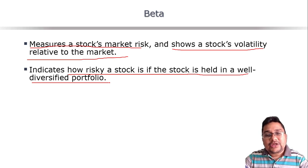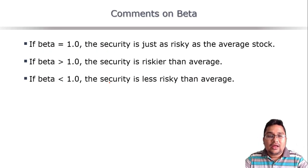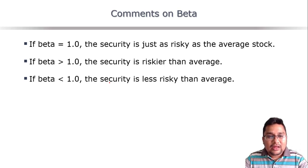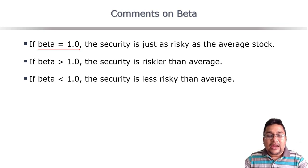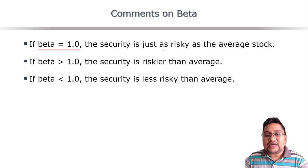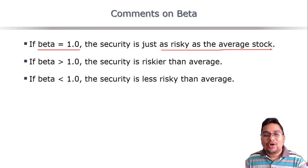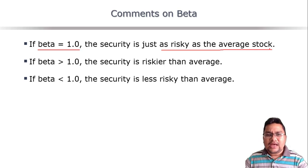Now let us talk about how to interpret beta. If the value of beta is 1, it means the security is just as risky as the average stock or the overall market. It does not have any more or less risk than the market — it is as risky as the average stock, the average market, or the average business.